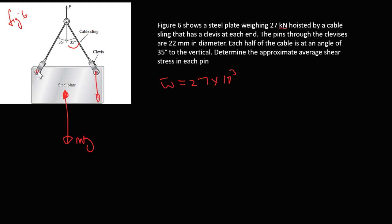So the weight is evenly distributed on both clevises. If this is side one and side two, we have two components of weight. Because the angle is the same, we can assume this weight is divided evenly. If we divide the weight by two, we get 13.5 kN on each clevis, which sums up to the resultant weight of 27 kN.